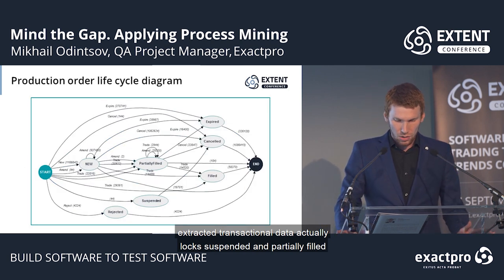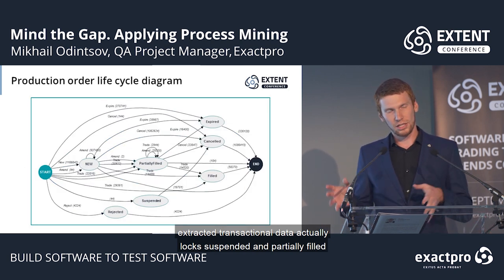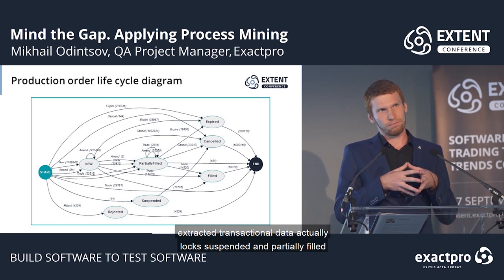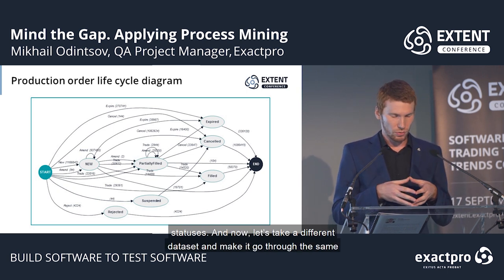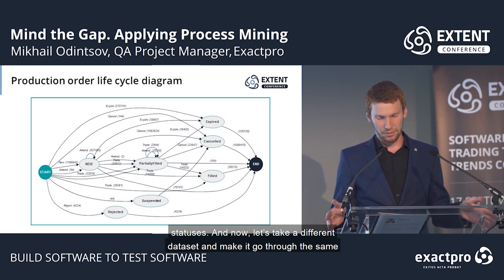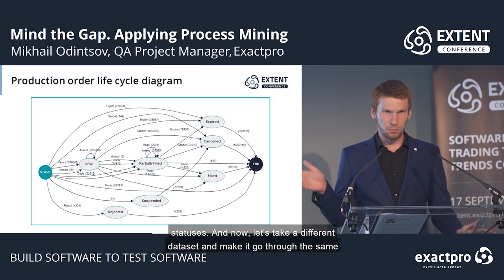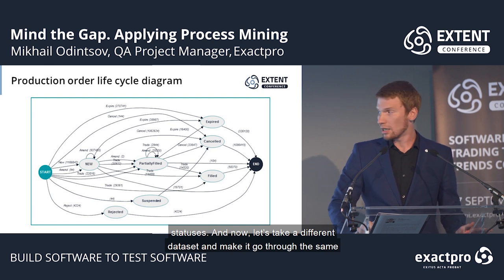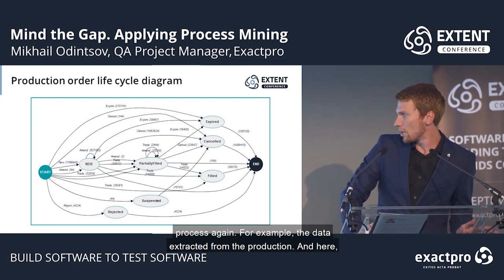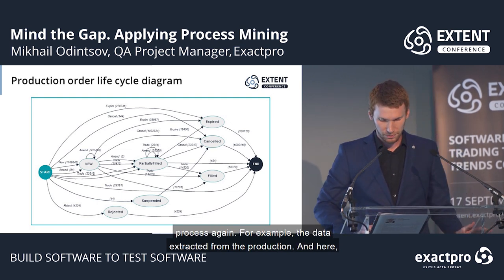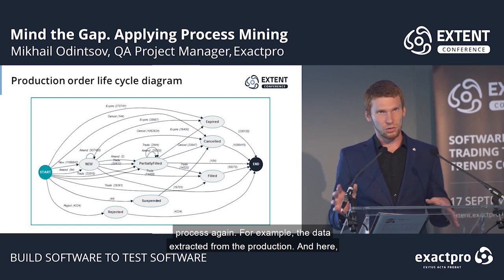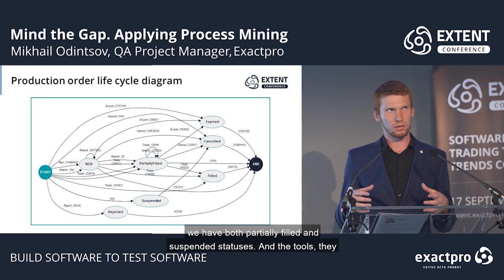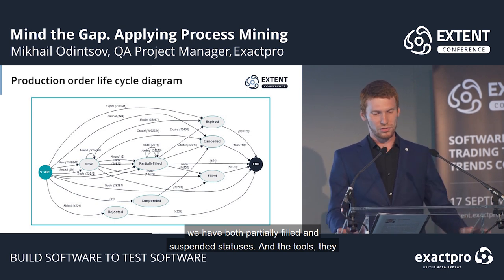Now, let's take a different dataset and run it through the same process again — for example, the data extracted from production. Here, we have both partially filled and suspended statuses. The tools can compare both representations and highlight the discrepancies.